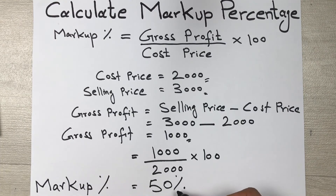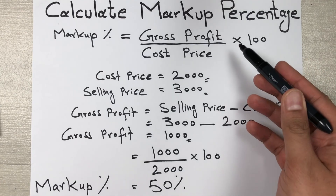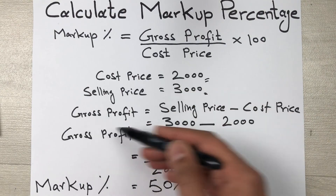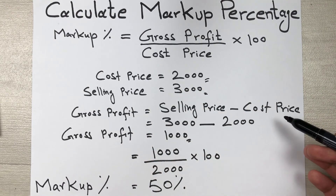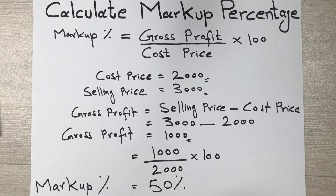So 50% is our markup percentage. This is how you can find the markup percentage — first you need to know the formula, then find the gross profit, and once you have it, simply plug the values in to get your final answer. I hope you liked the video — please subscribe to my channel, thank you very much.